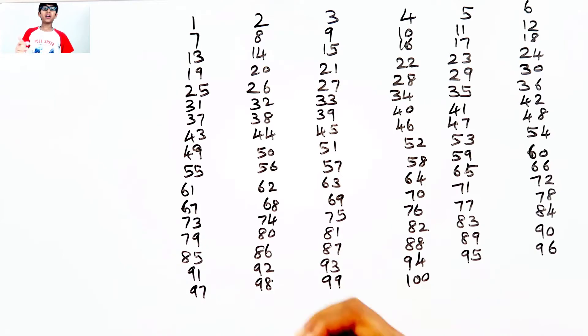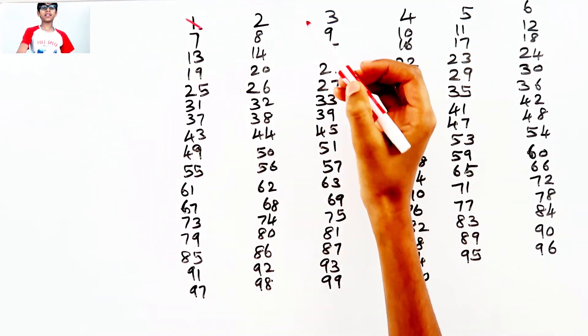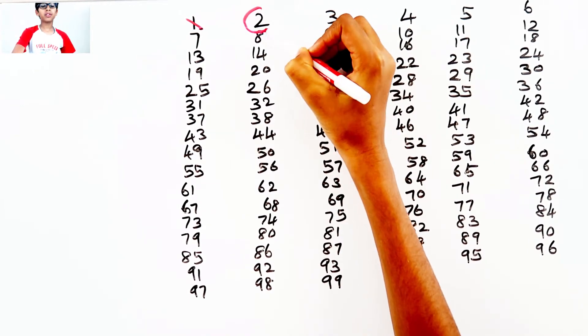We know that 1 isn't a prime number, so I'll just cross it out. 2 is a prime number, so I'll circle it.